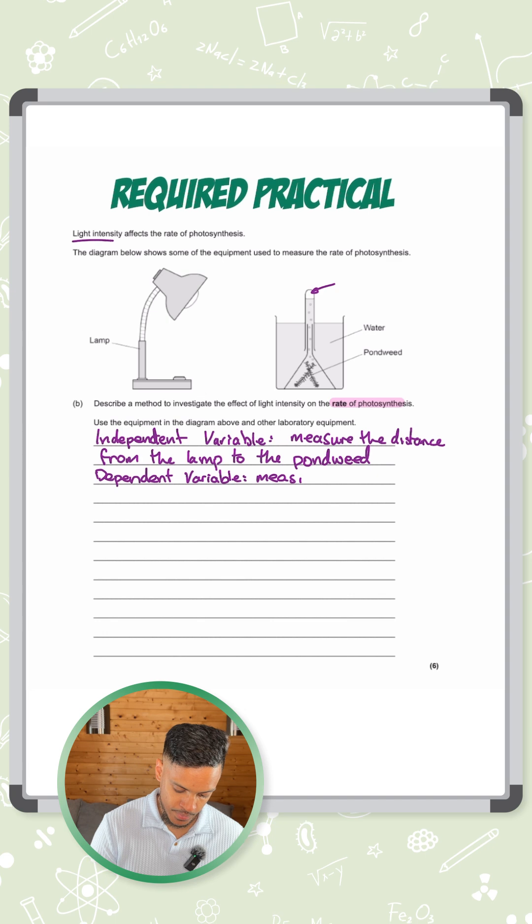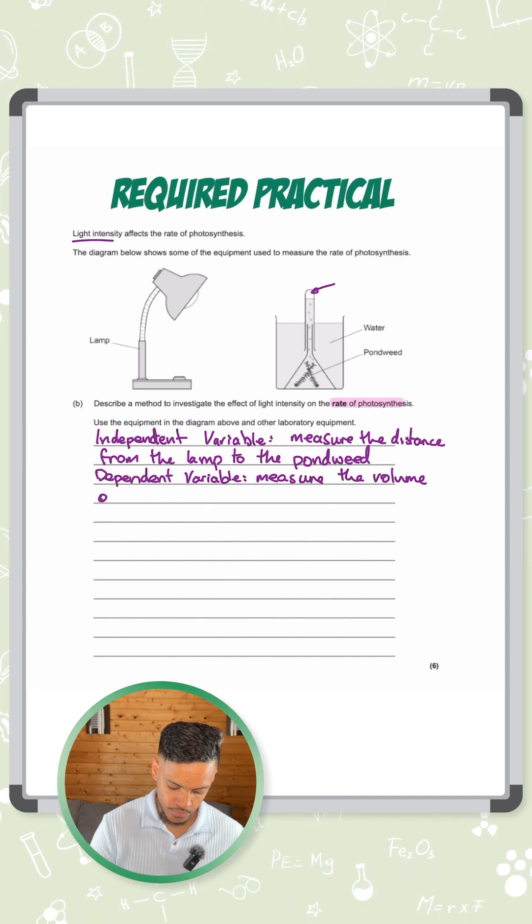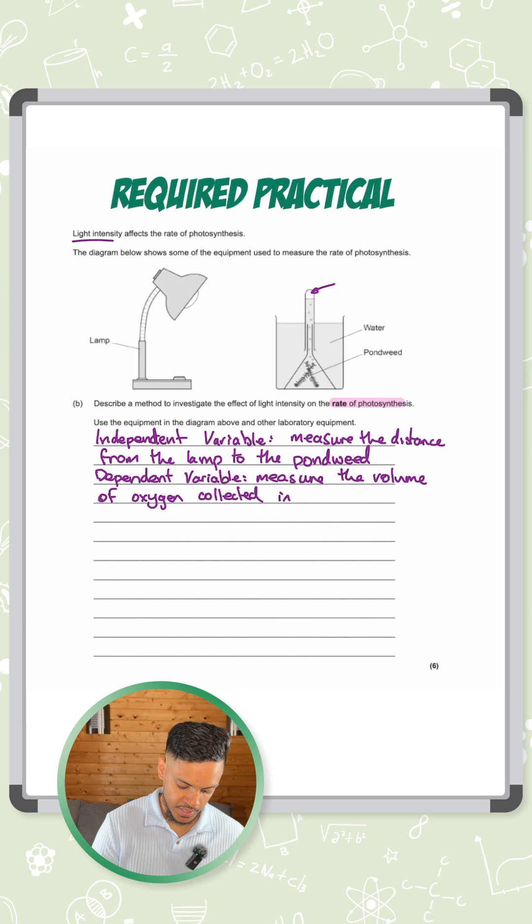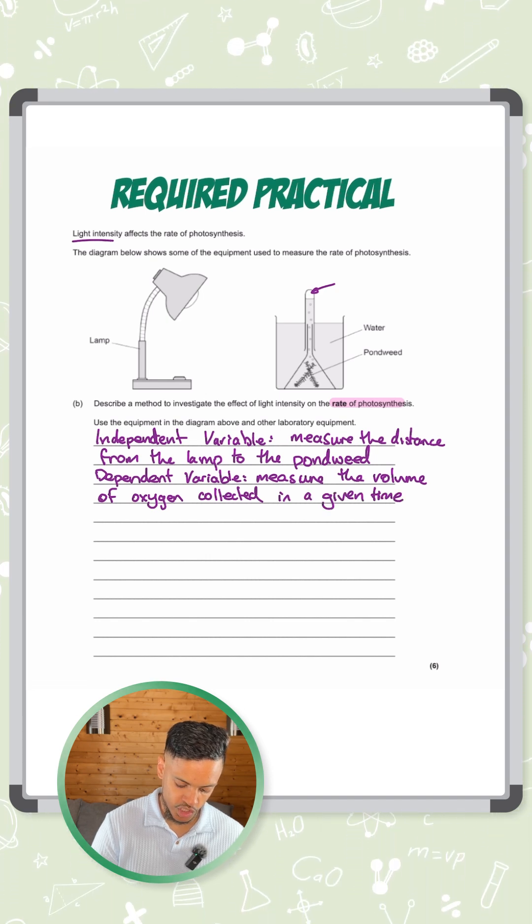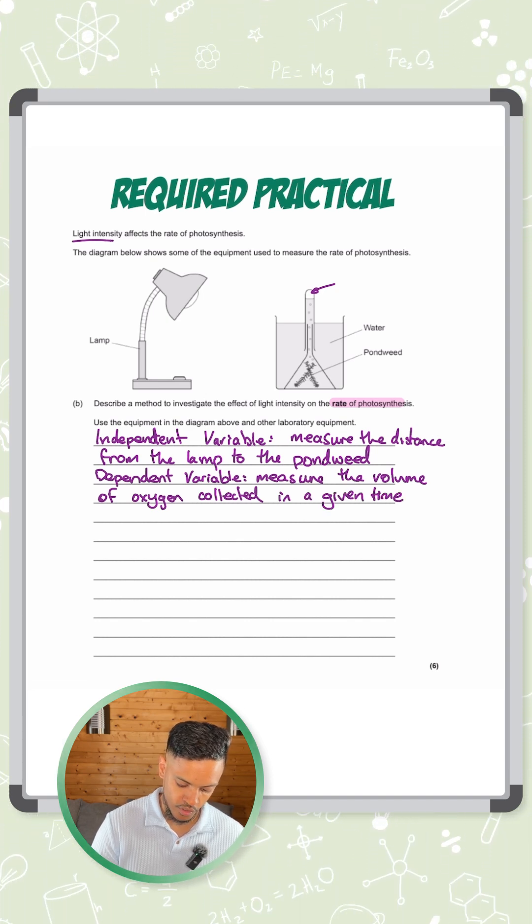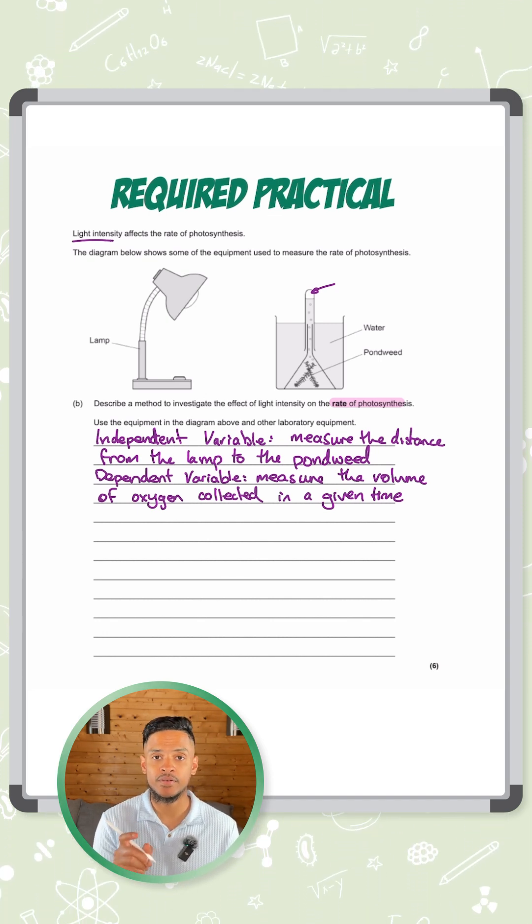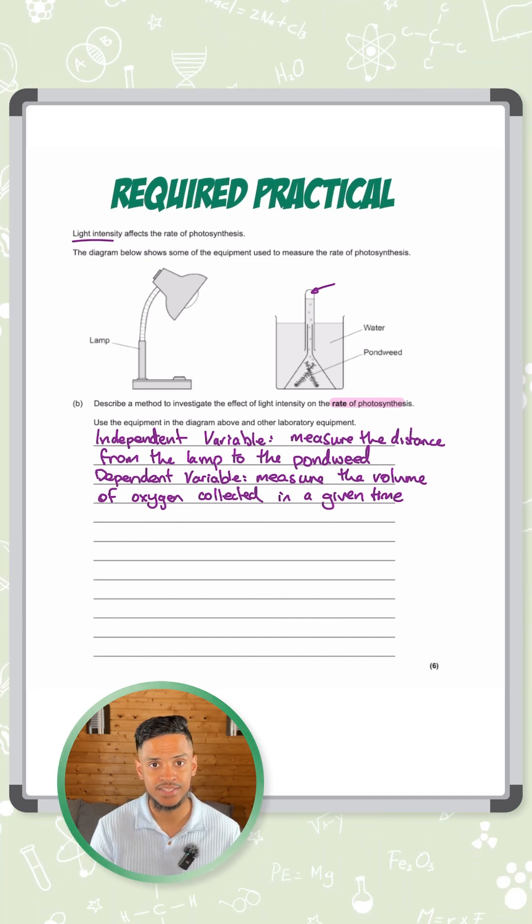I'm going to say measure the volume of oxygen collected and remember to say in a given time because it's not the total amount of oxygen collected. It's the amount of oxygen collected in a set period of time. That tells you how fast it's occurring.